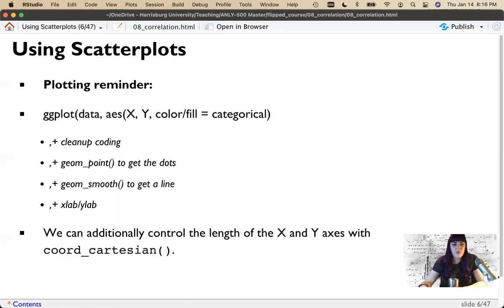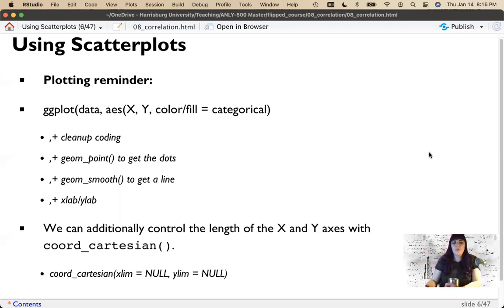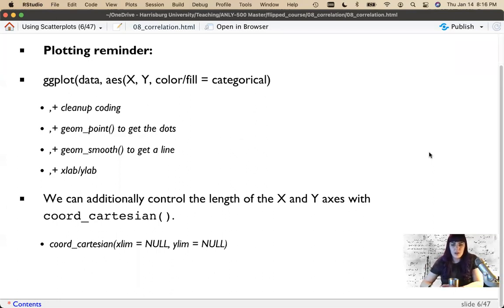Then we start adding things like our cleanup code, our points, geom_point which has the dots, our geom_smooth if we want to add the line to help us see which way the direction goes, and then our x and y-axis labels. Something new here is coord_Cartesian. This is allowing us to control the length of x and y. Since these are continuous variables, we can chop off part of the graph or add more graph. Let's say we want to control the graph by making the x-axis run from 0 to 100 and the y-axis from 0 to 101. Sometimes you'll need to run it slightly outside the range of the data because the dots will hang off the edge otherwise.